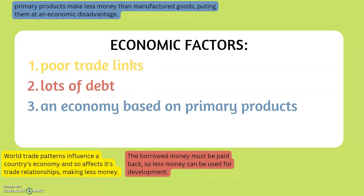Economic factors include poor trade links, lots of debt, and an economy based on primary products. Poor trade links: world trade patterns influence a country's economy and affect its trade relationships, resulting in less money made.